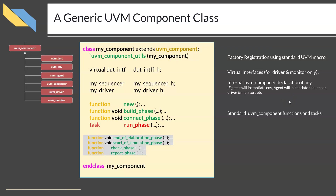At this point you might be wondering what factory registration is. This is a special mechanism provided with the UVM library — a powerful technique to reuse your UVM components without changing the actual code in several places. For now, just understand that with every UVM-derived class you have to give a factory registration macro immediately after the first line of the class definition. For all component classes, the macro name is `uvm_component_utils`. Also note that since it is a SystemVerilog macro, you do not write a semicolon after the macro definition.